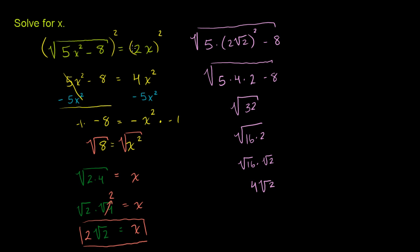Let's see what 2x simplifies to. Our original right-hand side was just the 2x. So what's 2x? 2 times 2√2. Well, that's just 4√2.